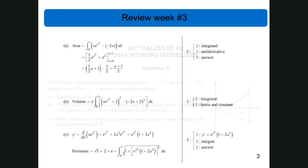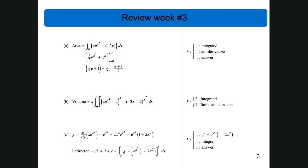For part A, we have the integral from 0 to 1 of x·e^(x²) minus 2x. Take the integral — the answer should be (e + 1) / 2.